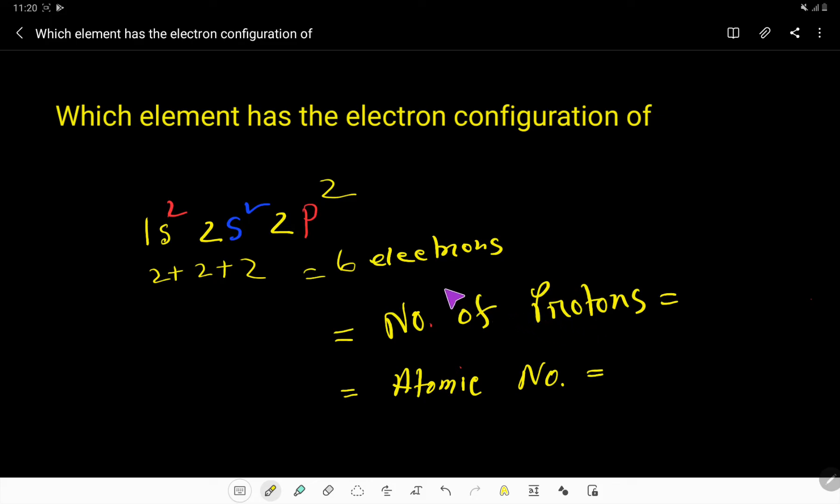So in a neutral atom, the number of electrons and the number of protons will be equal. And you know that the number of protons in an element is called atomic number, so this element's atomic number will be six.